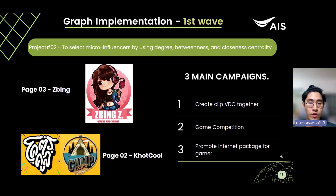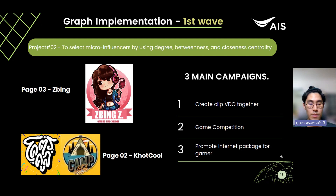The second project will focus on increasing customer base and engagement with three main campaigns. The first campaign is that two influencers will create a video together, going camping and playing a mobile game to show AIS has a strong signal even in camping locations. The second campaign is a game competition where both pages build teams from their fans and let people vote for the winner. The third campaign is an online campaign promoting internet packages at special prices for gamers, with giveaway codes for discounts and in-game items to attract more customers.